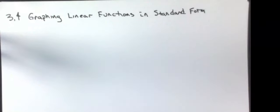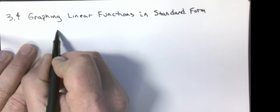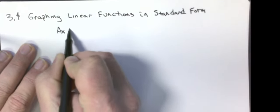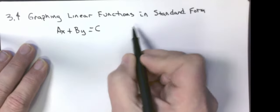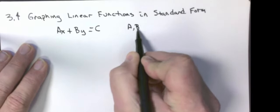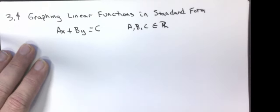Our next section is 3.4, which is graphing linear functions in standard form. Linear functions in standard form are anything that looks like AX plus BY equals C, where A, B, and C are real numbers.